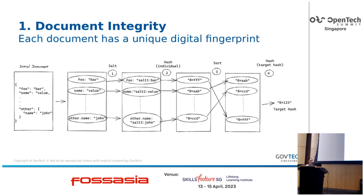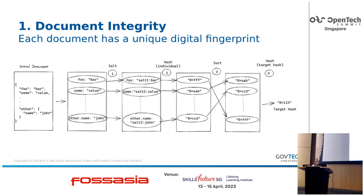This also allows us to perform selective redaction on the document. If we want to redact a particular field of the credential, it's possible to remove it from the credential and store the hash under a field called obfuscated data. This does not invalidate the target hash because we compute it using all the hashes stored in the open attestation document, including those moved to obfuscated data.